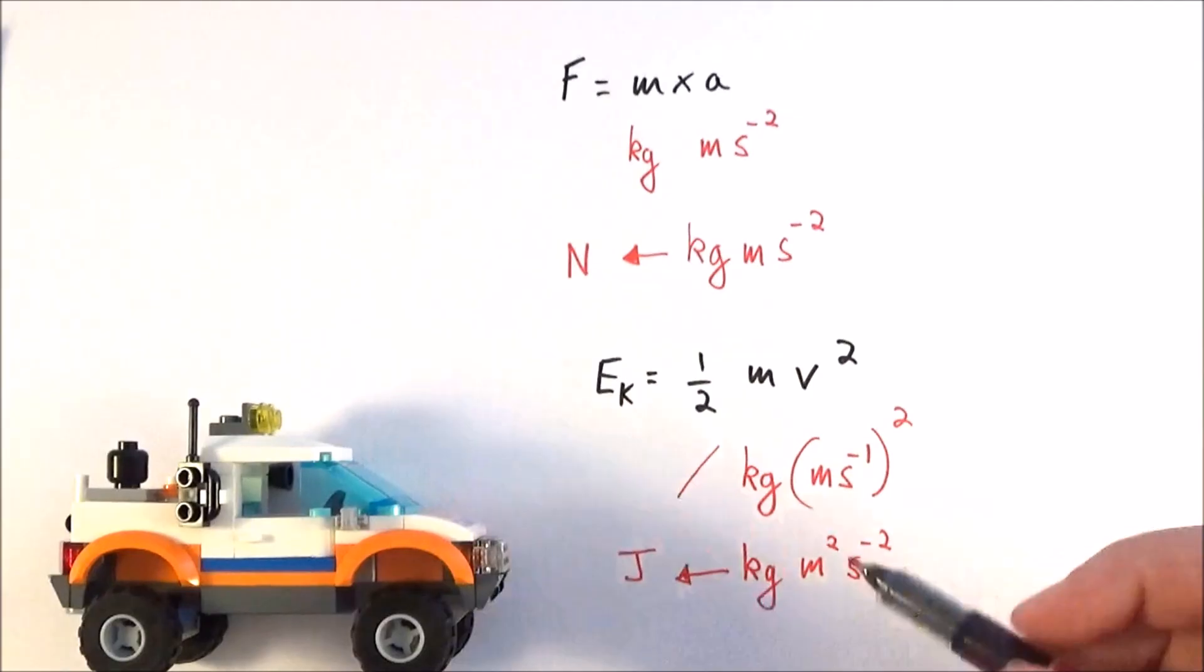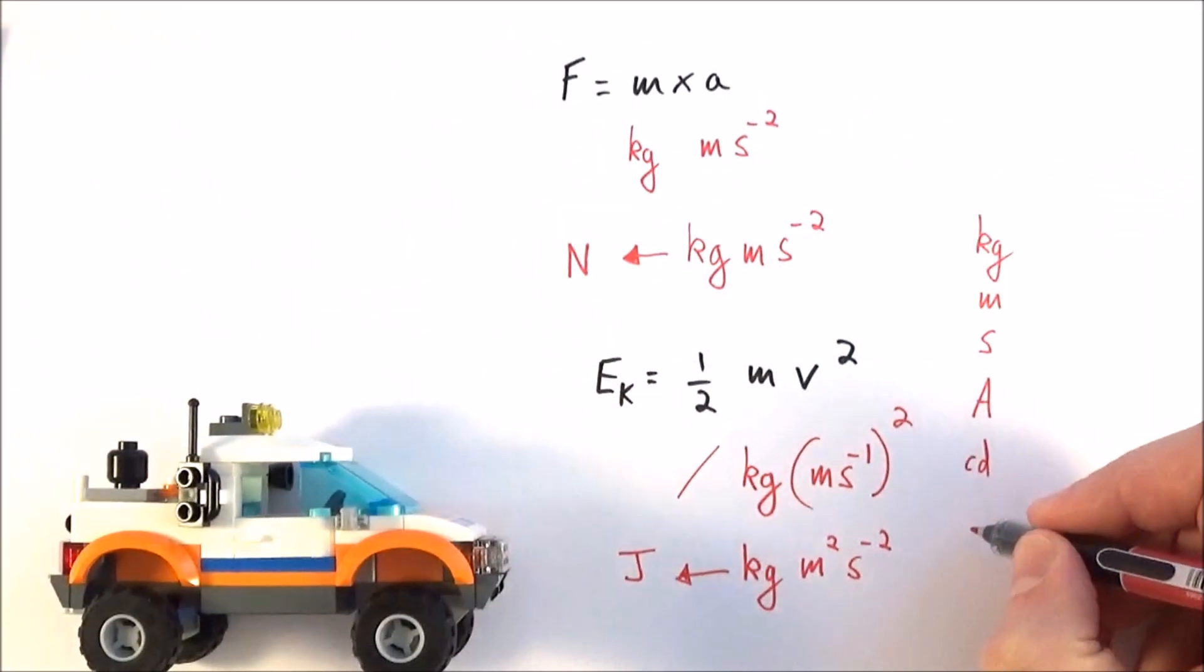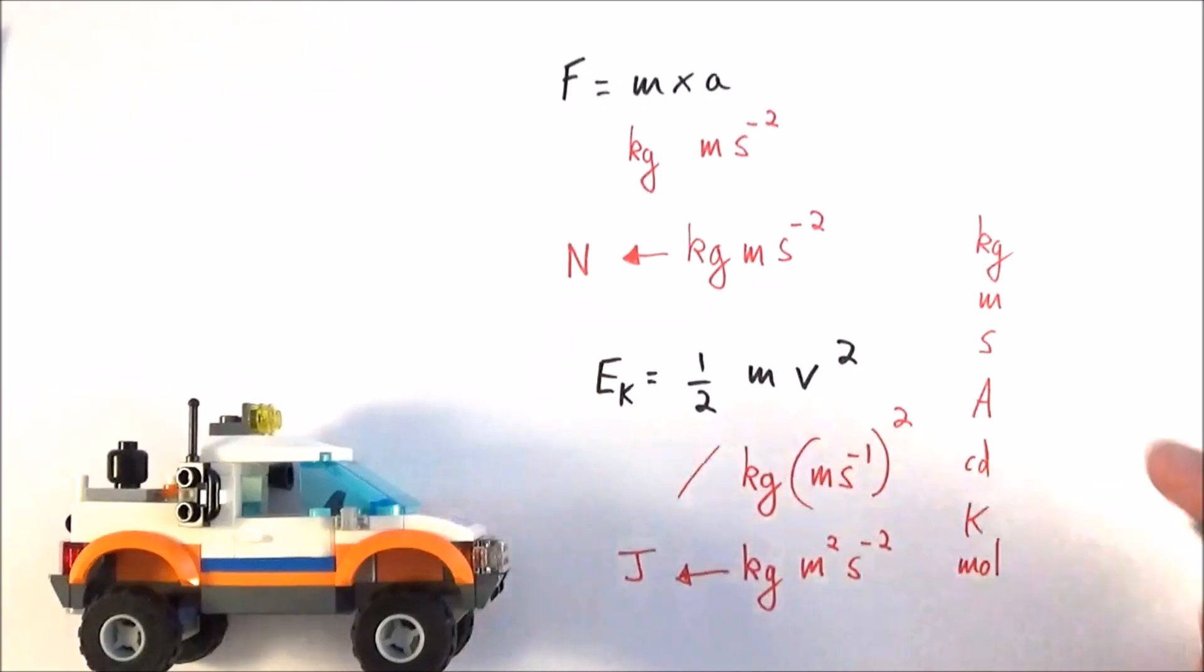So what we have here are the base units. Remember there's only seven. Kilogram, meter, second, ampere, kelvin, and there's one more that I've forgotten, the mole. So these seven base units make all of the other units.